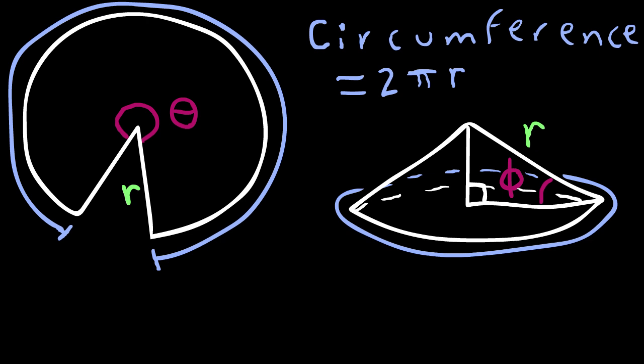The circumference of a circle is pi times diameter, or 2πr. Since we're considering a circle sector, that should be some fractional part of that, which turns out to be θ/(2π). The 2π's cancel out, leaving θ × r as the circumference of the circle sector.